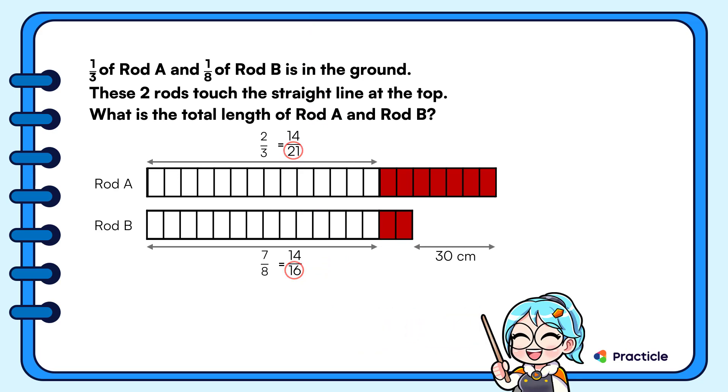Remember that we were asked in the question to find the total length of rod A and rod B. In other words, we want to find how long 21 plus 16, 37 units, represent.